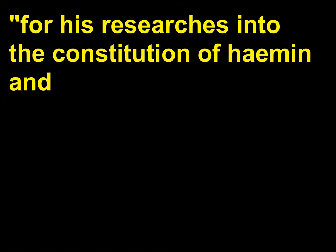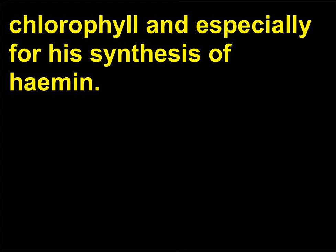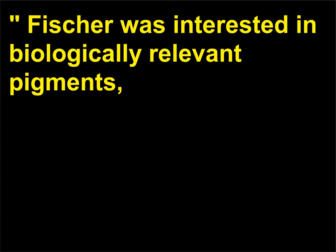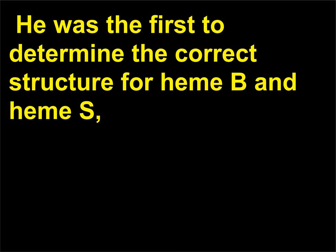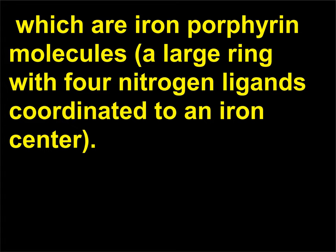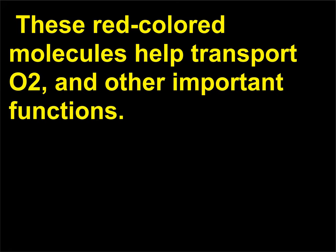For his researches into the constitution of hemin and chlorophyll, and especially for his synthesis of hemin. Fischer was interested in biologically relevant pigments, specifically those in human bodily fluids like blood and bile, and the green color of plants. He was the first to determine the correct structure for Heme B and Heme S, which are iron porphyrin molecules — a large ring with four nitrogen ligands coordinated to an iron center. These red colored molecules help transport O2 and serve other important functions.